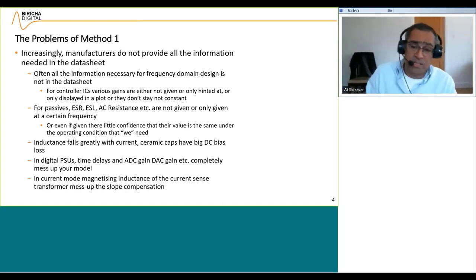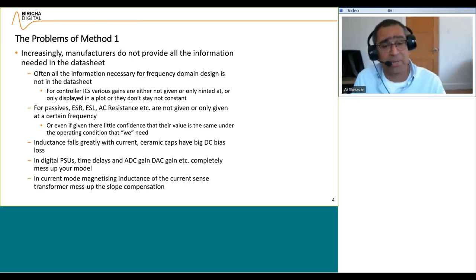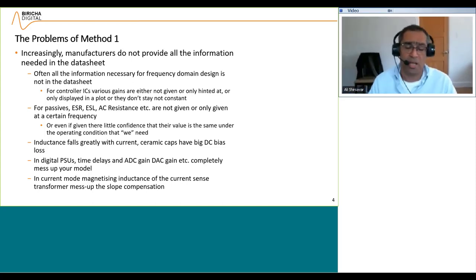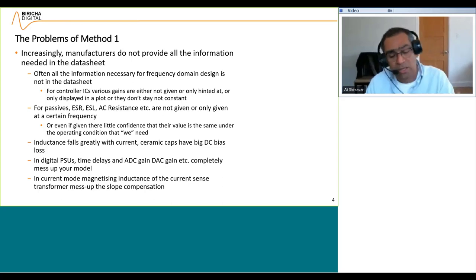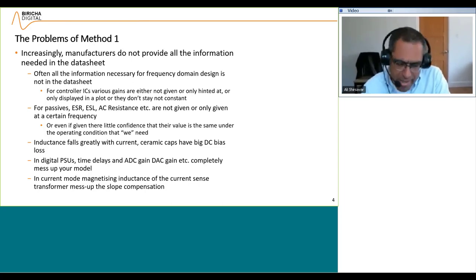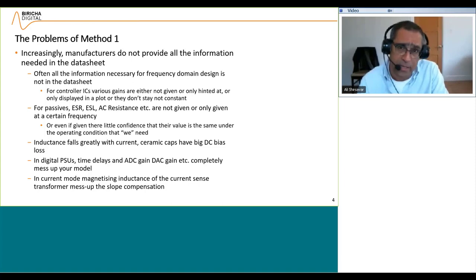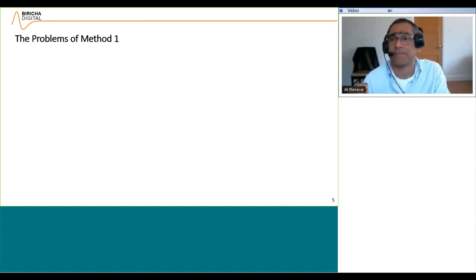In current mode, the magnetizing inductance of the current sense transformer messes up the slope compensation. As you can see, there are lots of things in the transfer function that require you to measure everything in detail in order to actually get the model accurate.